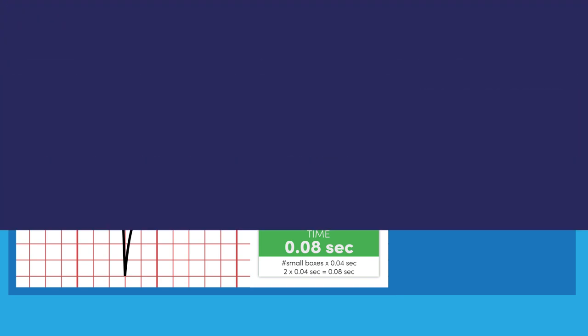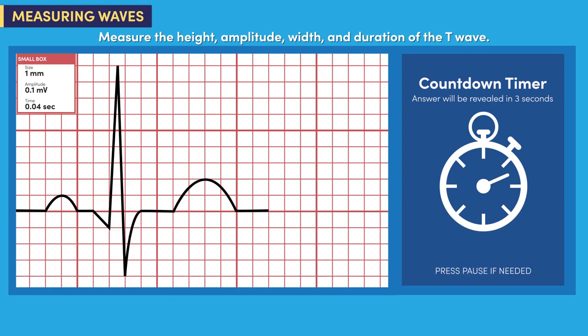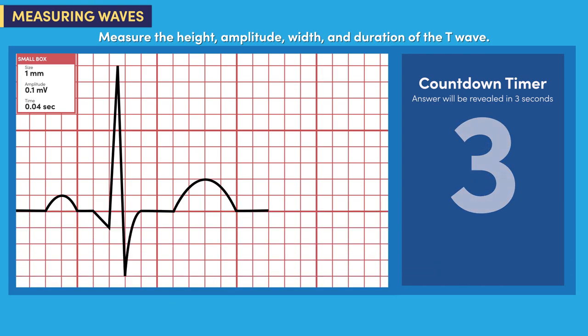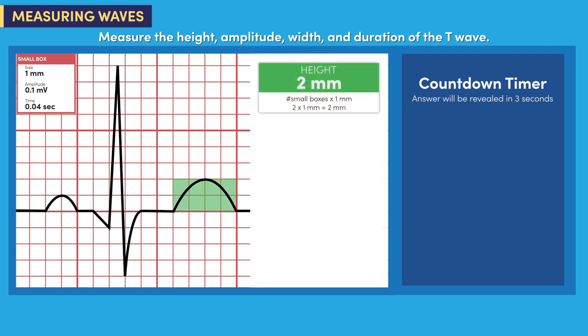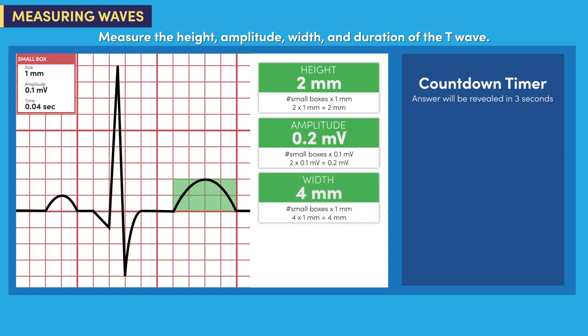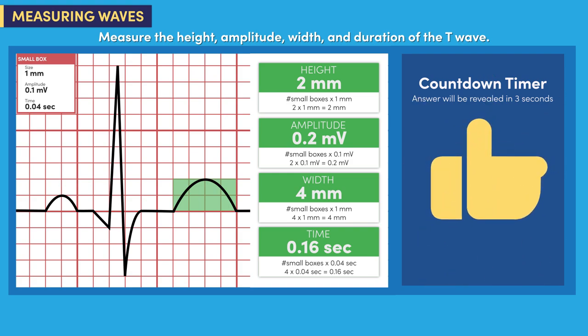Now you try it with the T wave. Measure the height, amplitude, width, and duration of the T wave. The height of the T wave is two millimeters. The amplitude of the T wave is 0.2 millivolts. The width of the T wave is four millimeters, and the duration of the T wave is 0.16 seconds or 160 milliseconds. Did you answer all of them correctly? Great job.